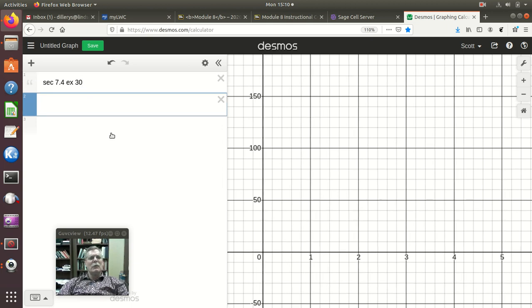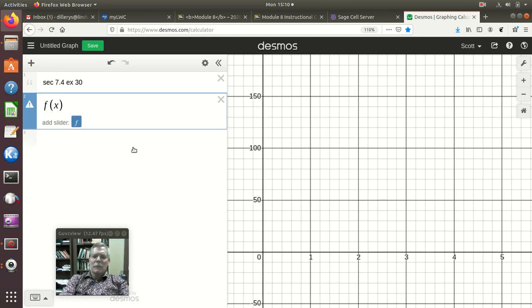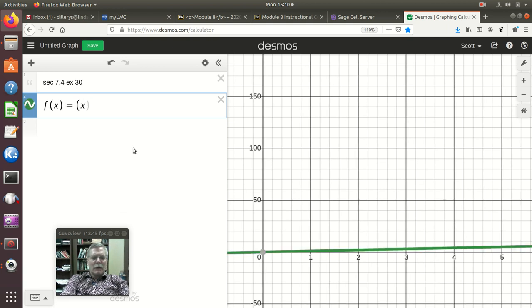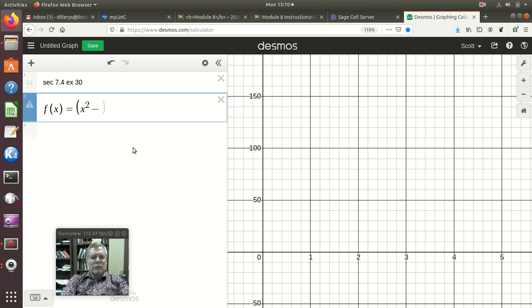This is just to show some slicker ways to get this done in Desmos. So the problem is that we are told f of x is equal to x squared minus 4 all squared. Okay, so we have this curve here.